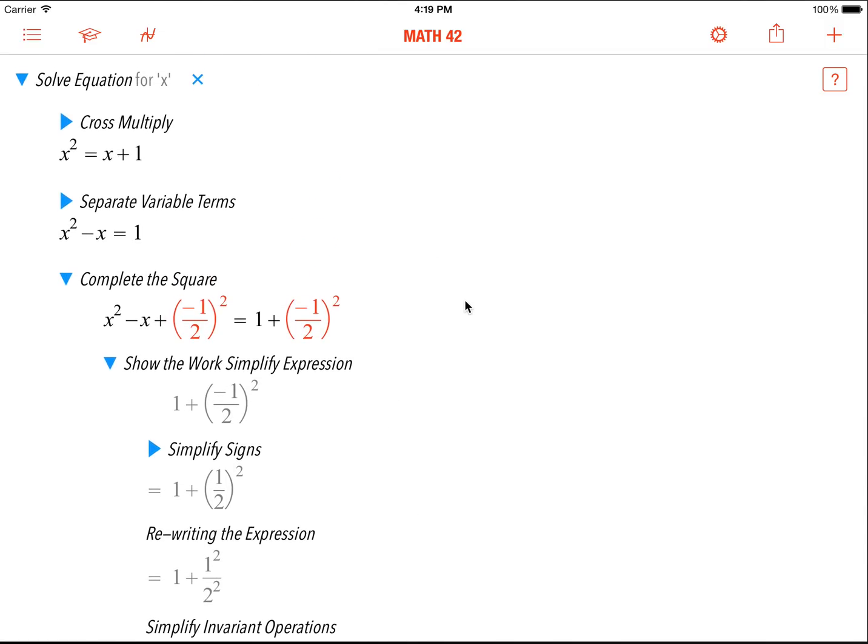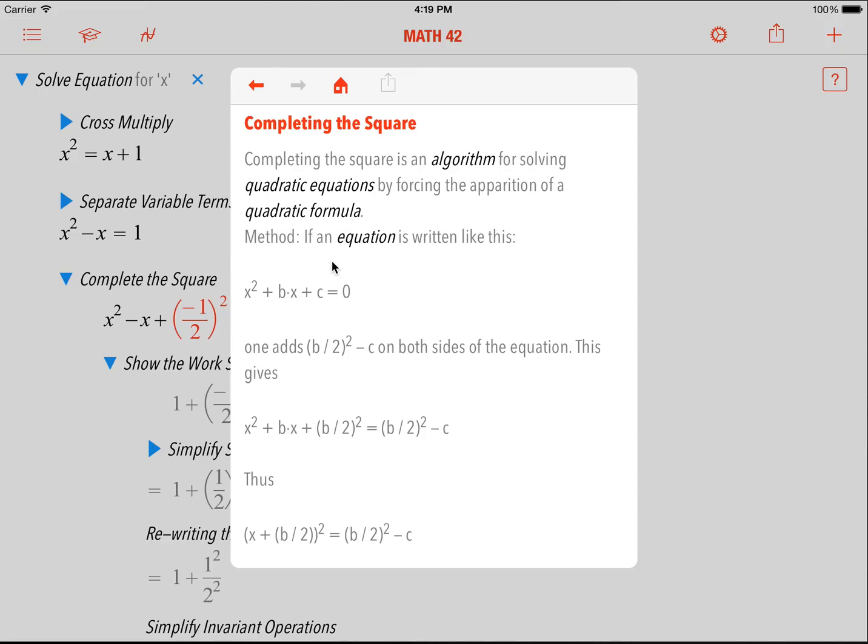Now, another problem that most students have is that maybe they haven't been in class, they missed the introduction to something new and then don't understand what the notion actually means. Which means that you have to give them an explanation. For example, what is completing the square? Math 42, I can click on it and now get an explanation with the method.